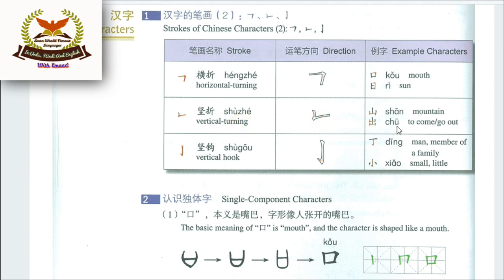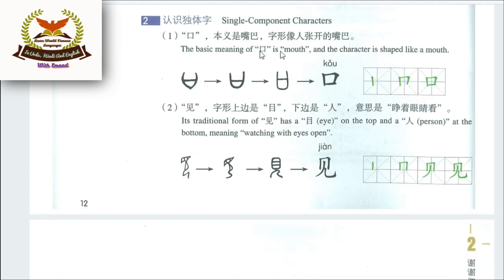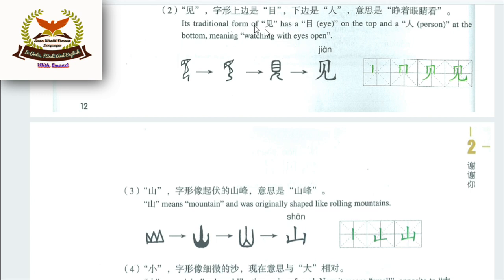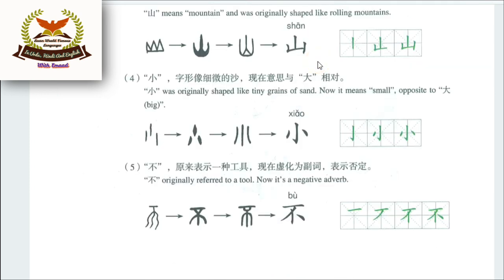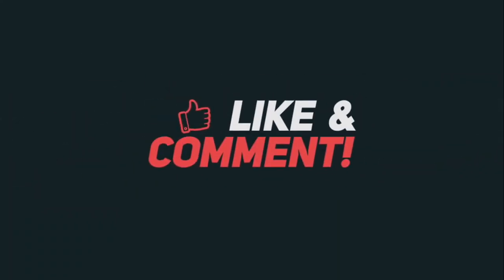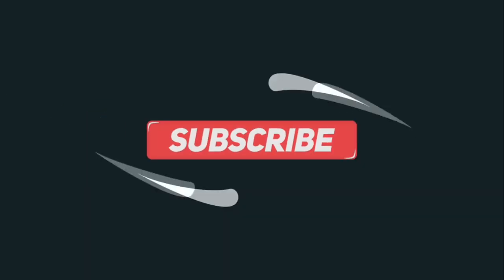Chinese character strokes: Shān (山) means mountain; Kǒu (口) means mouth — the character is shaped like a mouth; Jiàn (见) means see — traditional form has mù on top and rén at the bottom; Xiǎo (小) means small; Bù (不) means no/not; Yǒu (有) means have. Watch how each character is written stroke by stroke.